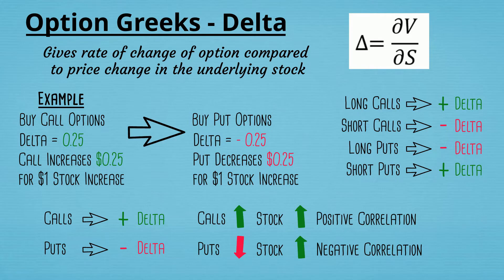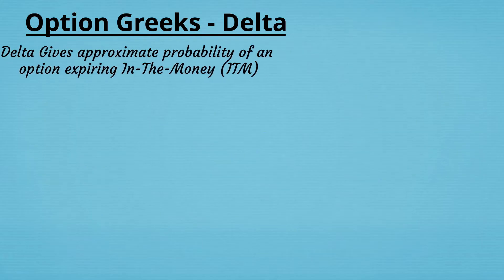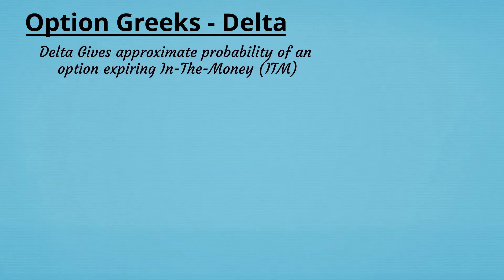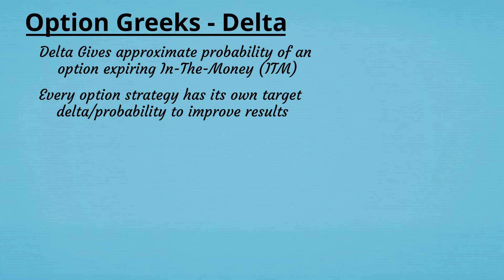This is not how I typically use Delta. The textbook mathematical interpretation gives you important information, but there's an even more useful way to look at it. Delta gives you the approximate probability of an option expiring in the money. Anytime I'm putting on an option trade I have a target Delta in mind — in other words a target probability — and that's how I choose my strike prices. That target Delta can vary depending on the strategy I'm using.